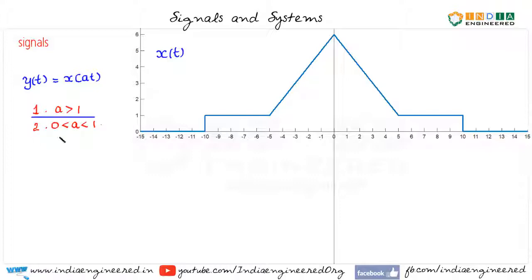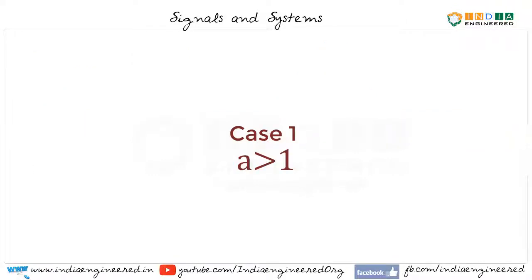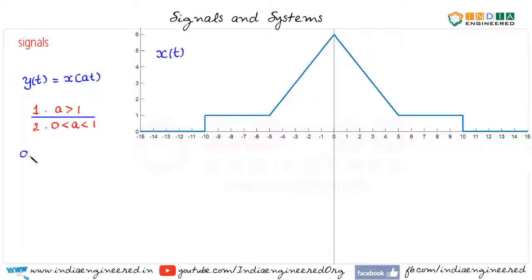Let us consider the first case. Let's say a equal to 2, that means y of t is equal to x of 2t. Now, we have x of t here. What we need is x of 2t. We have seen in an earlier example that when a is greater than 1, like in this case where a is 2, the signal will get compressed by half.